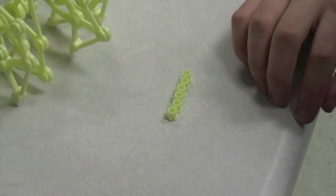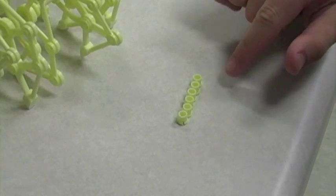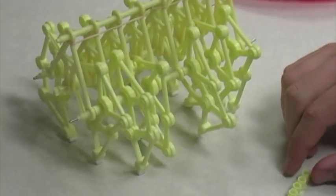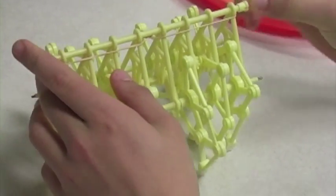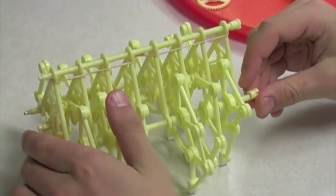For step three of section three, you're going to attach the stoppers to the ends of the joints on both sides of the body of the robot. There should be six in total.